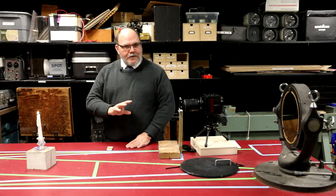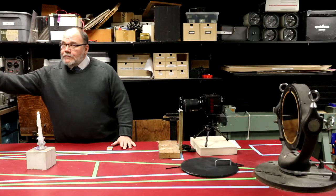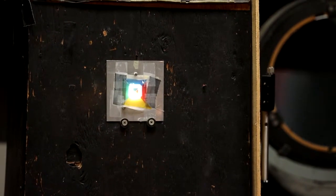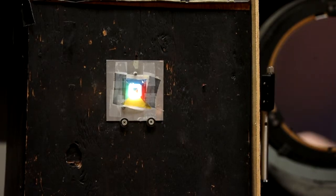There are several elements to the Schlieren system. There's the light source over here. It's a structured light source that we're using. There are lots of ways of structuring the light source. The way we're doing it is we're making four glowing colored bars of light: blue on top, yellow on the bottom, red and green on the sides.